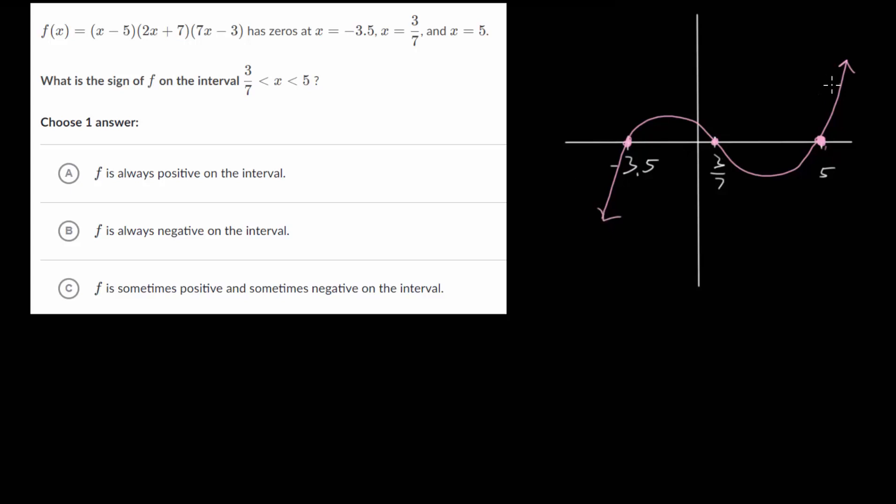So this is our function f(x) and one key point of a polynomial is that they are continuous. So we can say polynomials are continuous functions.